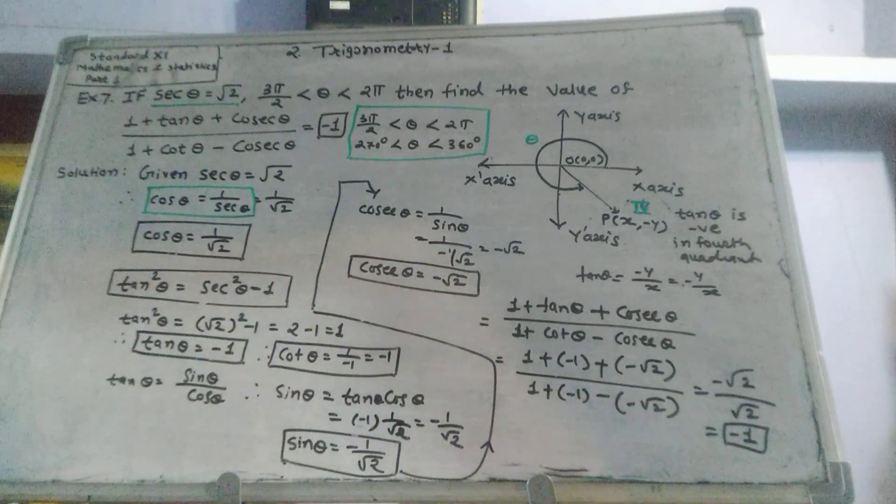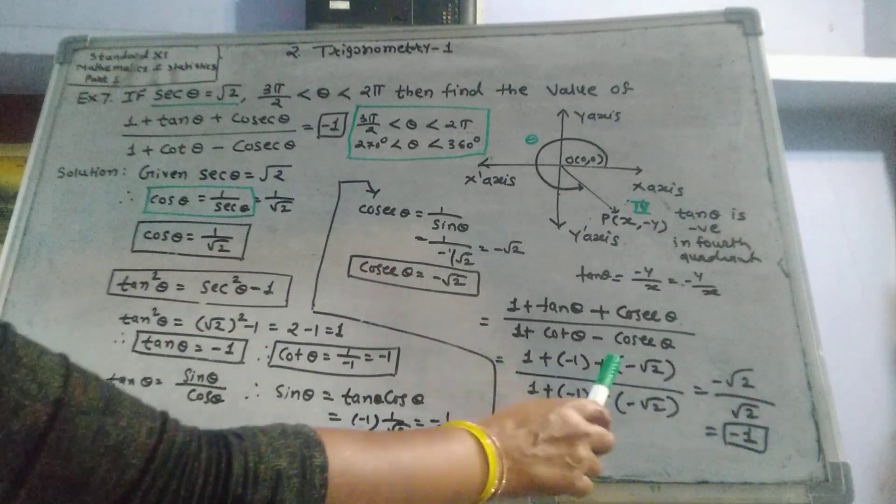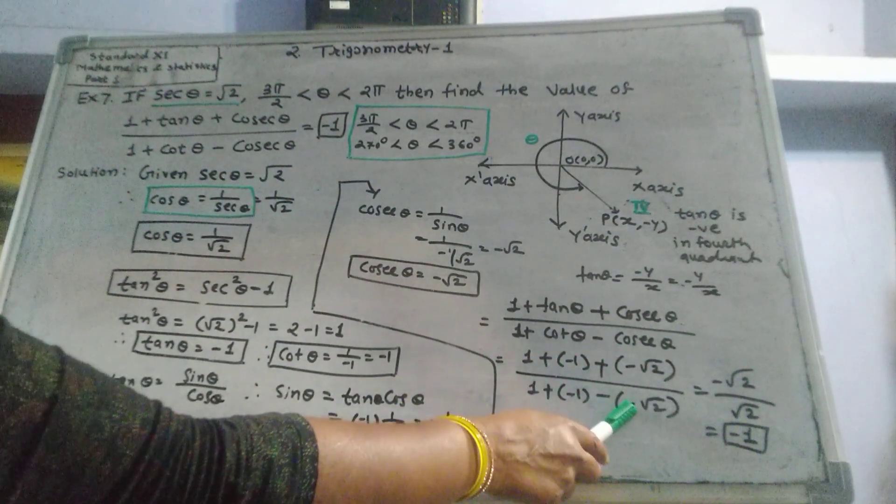So 1 plus bracket negative 1 plus bracket negative root 2, divided by 1 plus negative 1 plus bracket negative root 2.